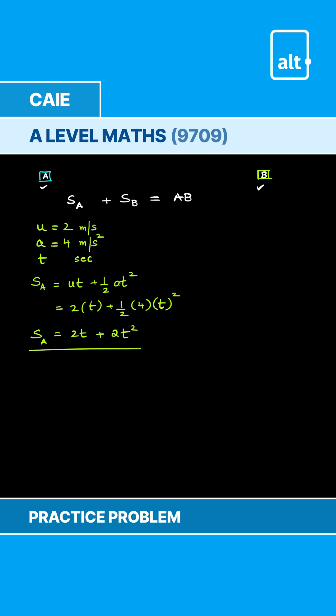Similarly, for the particle at B, the initial velocity is 3 meter per second and the acceleration is given as 2 meter per second square. The time is taken as t seconds. So therefore, we will write down the expression for displacement of B which is also U t plus half A t square but the value of U and A is different.